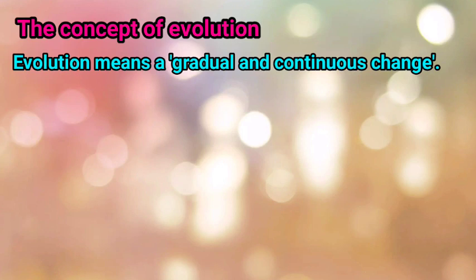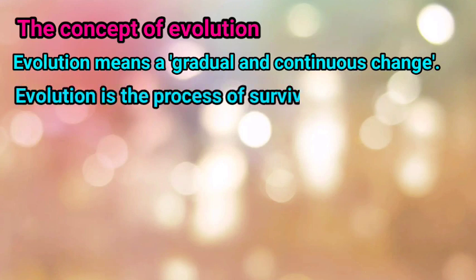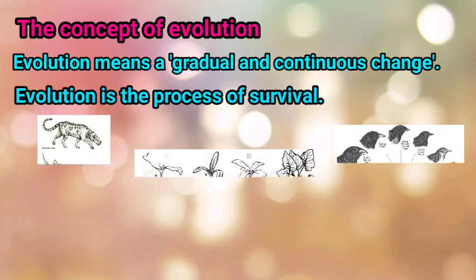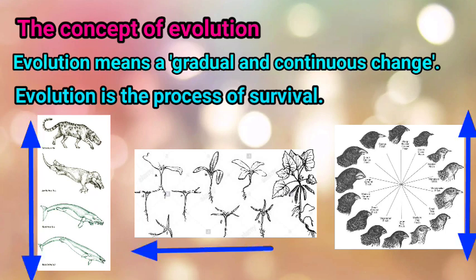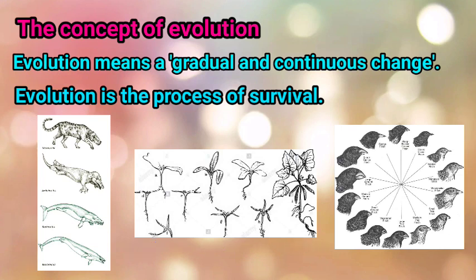Evolution means a gradual and continuous change. In reference to plants and animals, evolution is the process of survival. For surviving, all species of animals and plants adopt to environmental changes. In this process of evolution, certain internal physical changes take place in some animals of a species. These internal physical changes and environmental adaptations help the species survive in their environment.